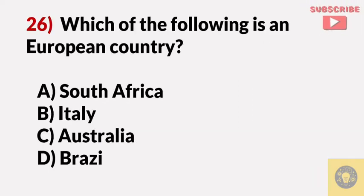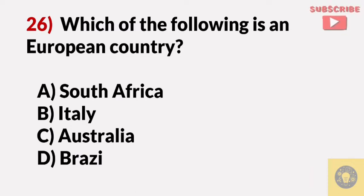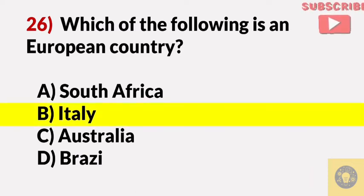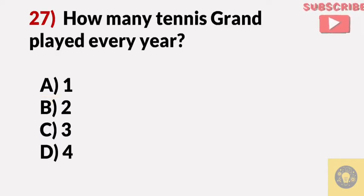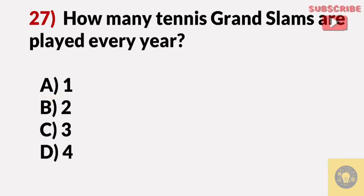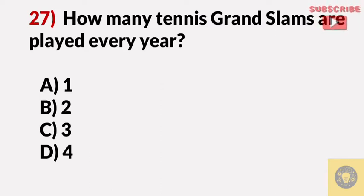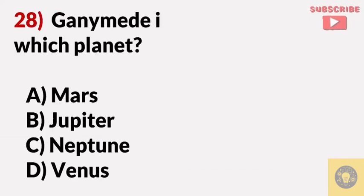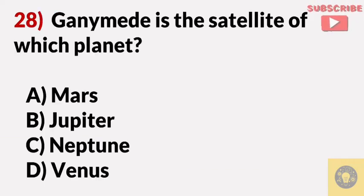Which of the following is a European country? Answer B, Italy. How many Grand Slams are played in tennis every year? Answer D, four. Ganymede is the satellite of which planet? Answer B, Jupiter.